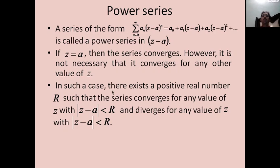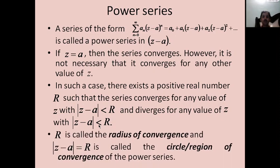Because of this, there exists a positive real number R such that the series converges for any z with |z - a| < R and diverges for any z with |z - a| > R. Such a value R is called the radius of convergence, and the expression |z - a| = R — which is a circle with center at a and radius R — is called the circle of convergence or region of convergence of the power series.